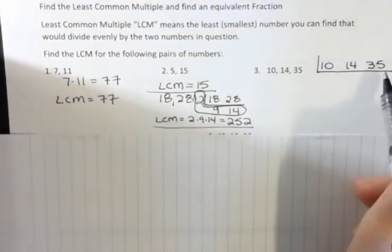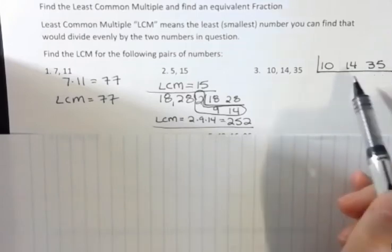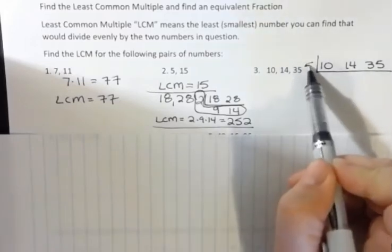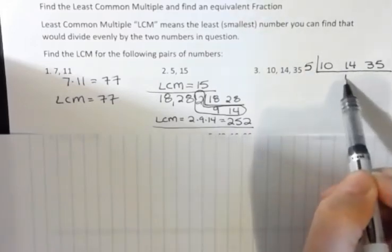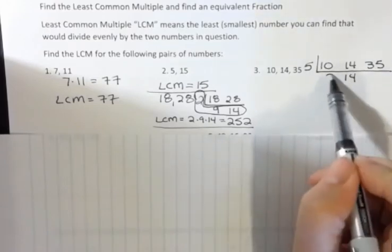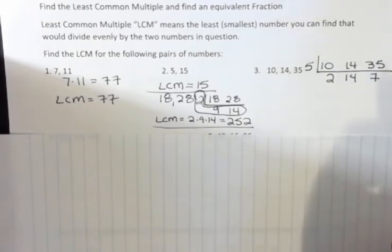When I'm working with three numbers, I want to first say, is there anything that goes into all three of these numbers? And there is not. So then I say, well, is there anything that goes into any two of these numbers? And maybe you'll see, well, five goes into ten and thirty-five. So I'm going to divide by five. Fourteen is not part of this. I'm just going to bring it down unchanged. Five goes into ten twice, and five goes into thirty-five seven times.